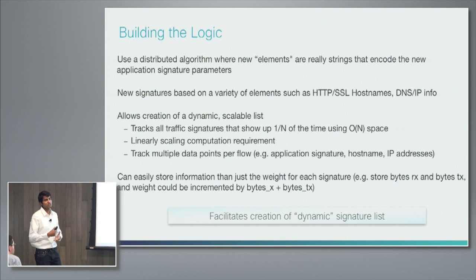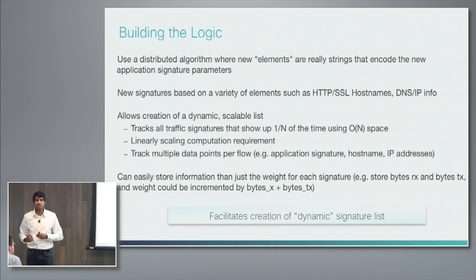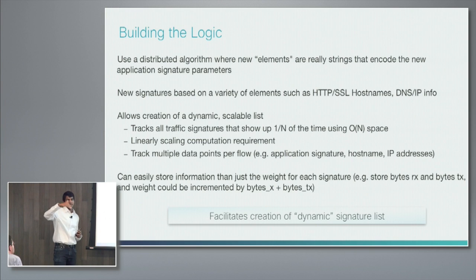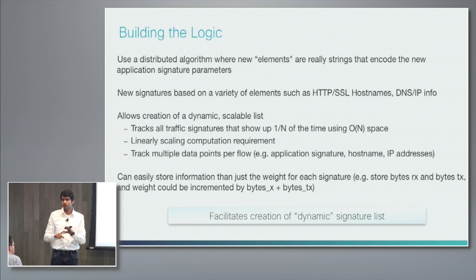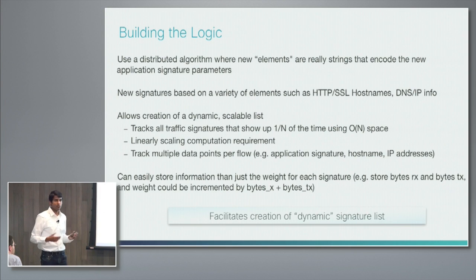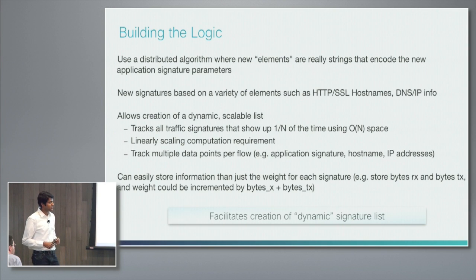Because we have an object of N spaces, we're able to track signatures that show up at least 1-over-N percent of the time. With a table of 10 elements, you capture stuff that shows up at least 10% of the time, and in practice the table is far more extensive. This lets us deal with linearly scaling computation. Because you're talking about a database that's updating dynamically, you can add more rows over time and track things like time spent, bytes in and out, and number of users per signature. This basically facilitates the creation of a dynamic signature list, meeting the customer requirement of seeing more applications and websites.